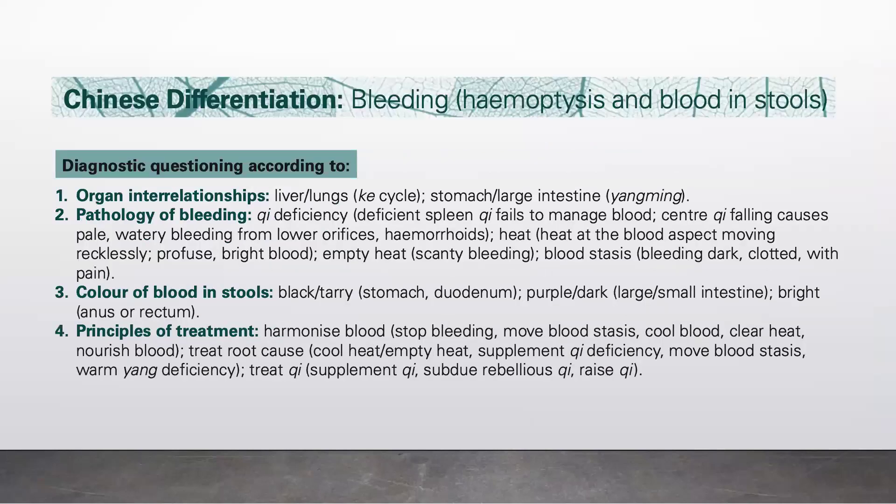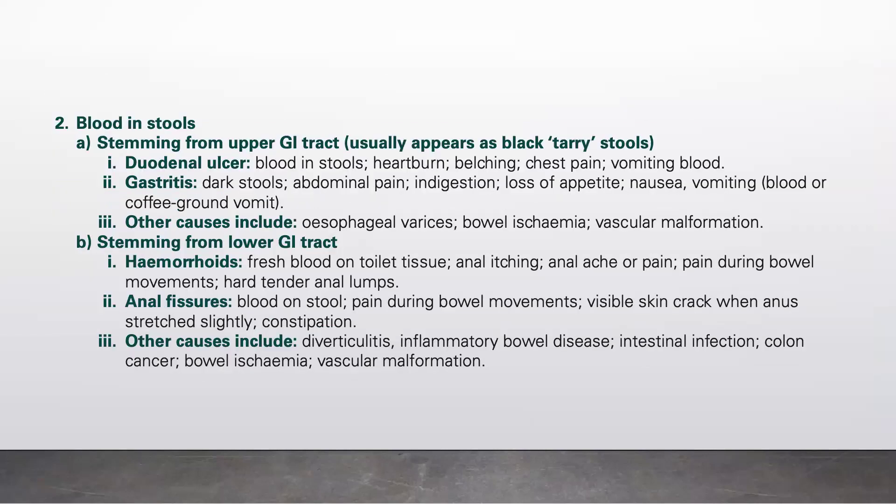If blood in the stool stems from the lower GI tract, it can be due to hemorrhoids, where there is fresh blood on toilet tissue, anal itching, anal ache or pain, pain during bowel movements, and hard tender anal lumps. It can also be due to anal fissures, where there is blood on stool and pain during bowel movements.